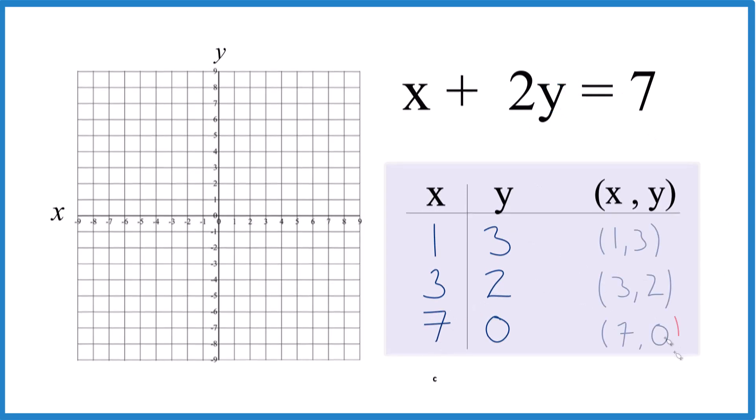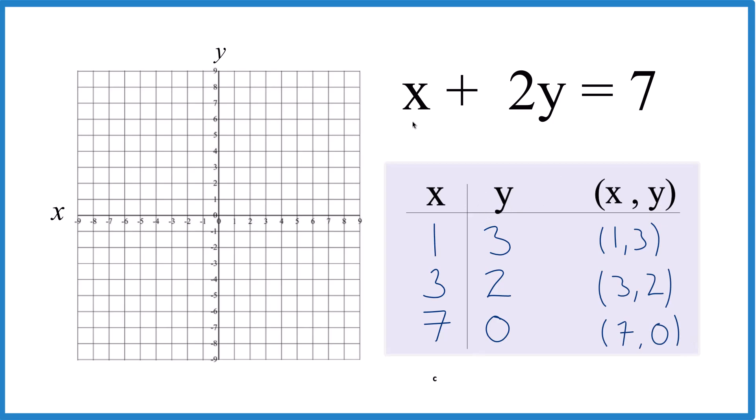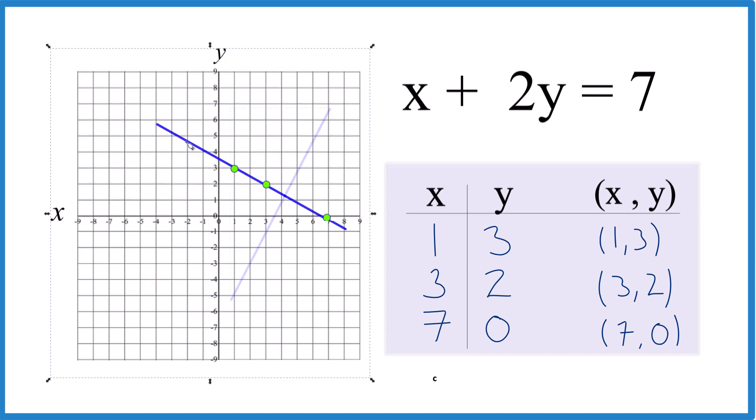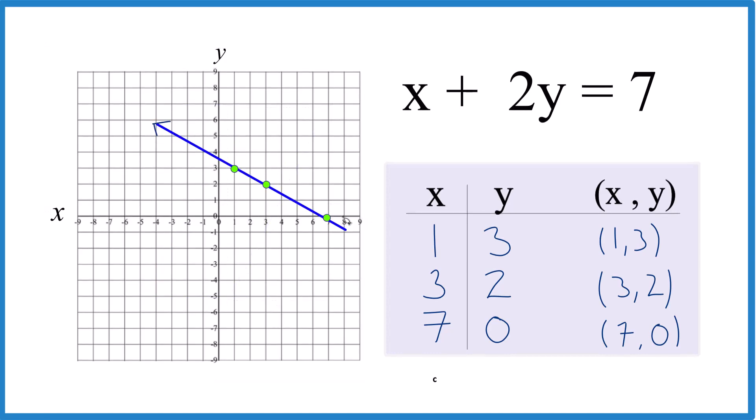So these are the points we're going to graph for this line here. x plus 2y equals 7. So x is 1, y is 3. x is 3, y is 2. So 3, 2 right there. And one more. x is 7, y is 0. There it is. You can see they line up. Let's put a line through that. Put arrows here. Show it goes to infinity. That's the graph for x plus 2y equals 7.